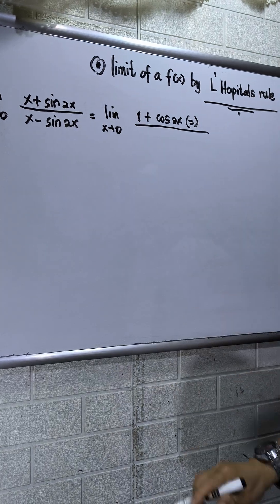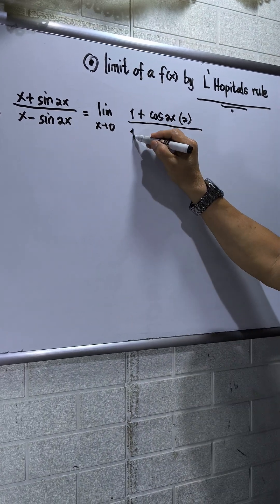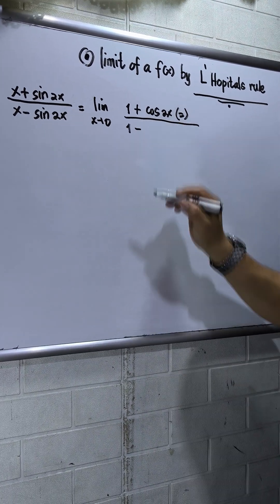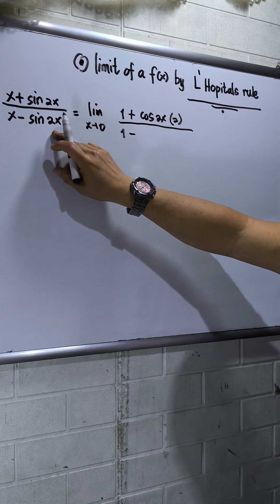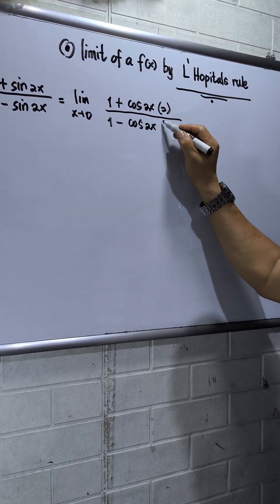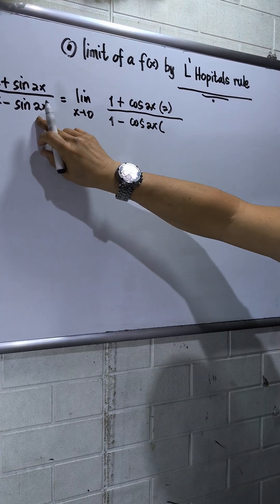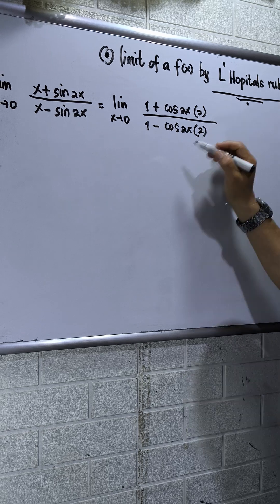For the denominator: derivative of x is 1, minus the derivative of sine 2x, which is cosine 2x, then times the derivative of 2x, which is 2.